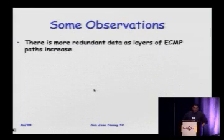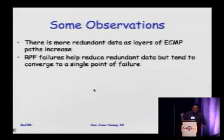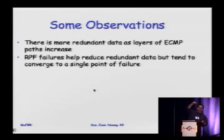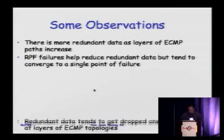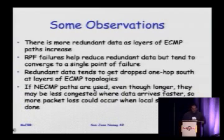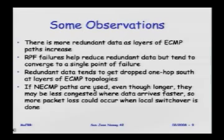There's more redundant data as you have multiple layers of ECMP. As you go from the receiver side up to the source hop by hop, more redundant data flows. But RPF failures at each level help reduce it — the redundant data comes to that third hop and usually gets dropped due to RPF failures, so duplicates don't go all the way down the tree, which is really good. With non-equal-cost paths, even longer paths may be less congested so data arrives faster, meaning more packet loss could occur during local switchover.